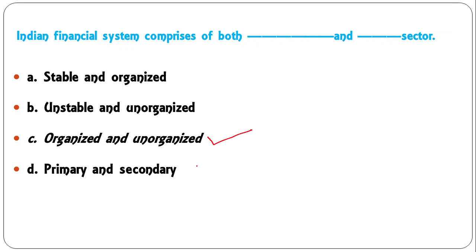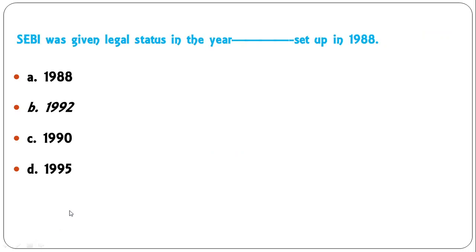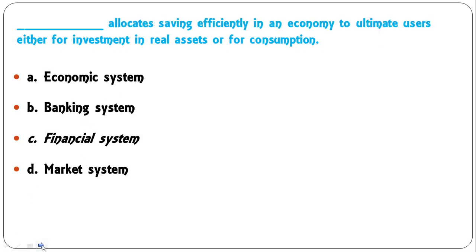Moving to the next: SEBI was given legal status in the year? SEBI, that is Securities and Exchange Board of India, was established in 1988, but it got its legal status in the year 1992. So B is the correct answer here.